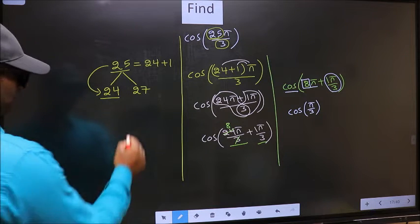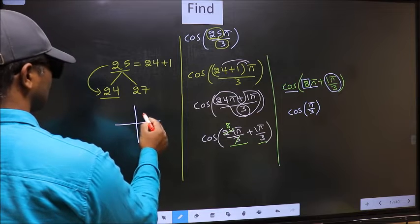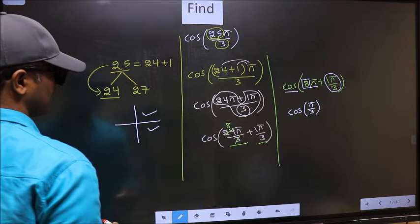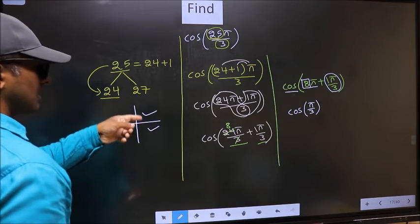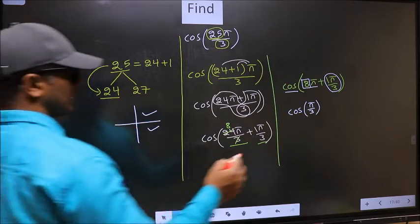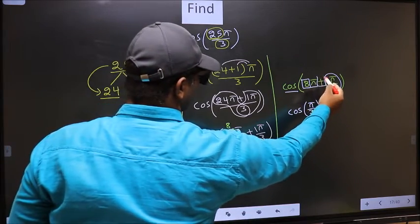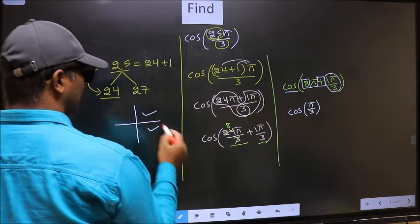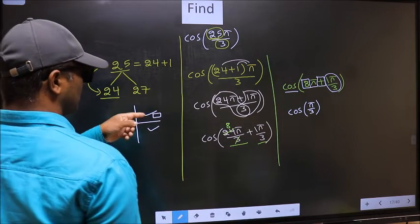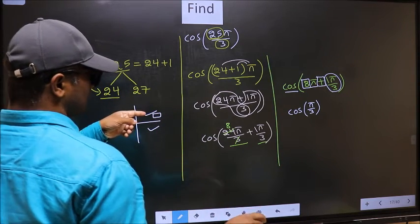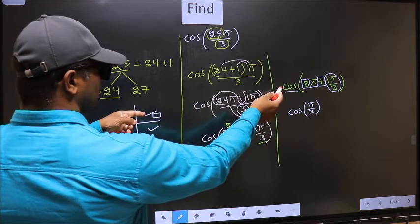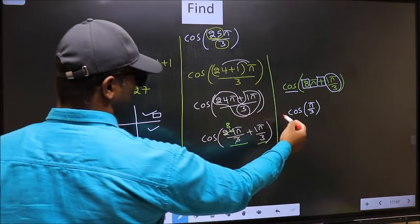And all the even multiples of π lie either in the first or in the fourth quadrant. So now to select the quadrant, we should look at this symbol. Here we have plus, so the angle lies in the first quadrant. And in the first quadrant, cos is positive. So we should put plus.